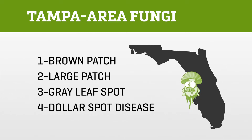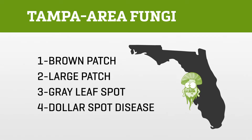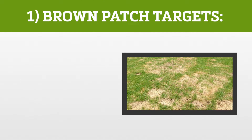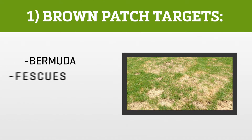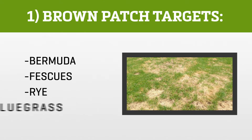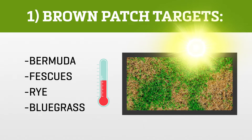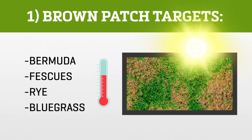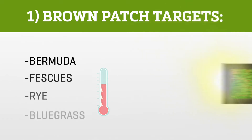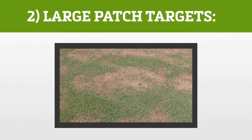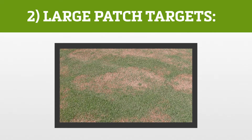There are four main fungi that love to wreak havoc on turf grasses in these parts: brown patch, large patch, gray leaf spot, and dollar spot disease. The first offender is brown patch — it goes after cool season grasses: bermuda, fescues, rye, and bluegrass, and is often found during the summer months when temperatures are the warmest.